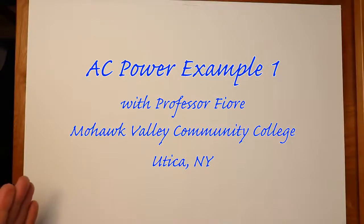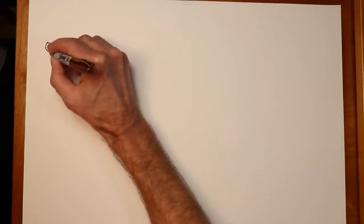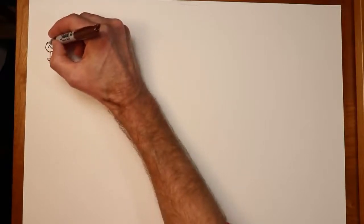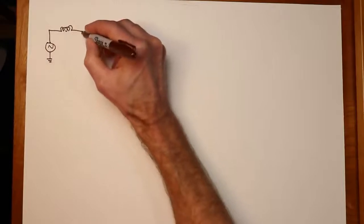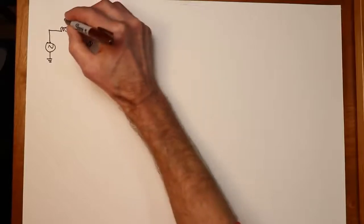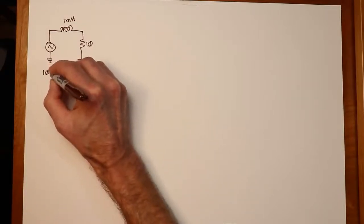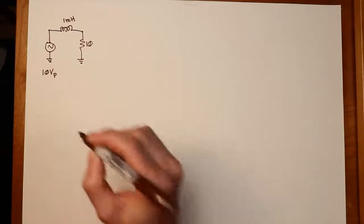And it's time once again for the exciting adventures of power calculations. Today we're going to pick up where we left off, start with a nice series circuit example of a complex impedance circuit, figure out what the power is, and take a look at the power triangle. So let's just dive right in. We'll start with a little source over here, feeding a 1 millihenry inductor and a 10 ohm resistor. We will say that our source is 10 volts peak. It's at a frequency of 1 kilohertz.